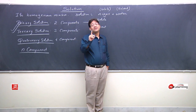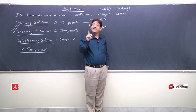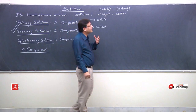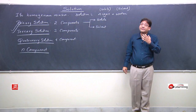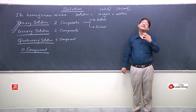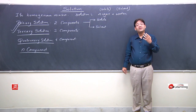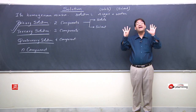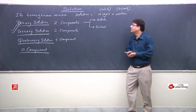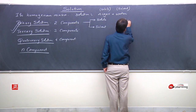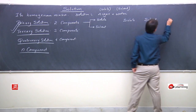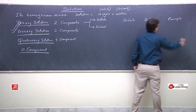Solute may exist in three physical states — it may be solid, liquid, or gas. Similarly, solvent may also exist in three physical states — solid, liquid, or gas. Depending on the physical state of solute and solvent, we have nine types of solutions. Let me write solute here, solvent here, and some examples here.